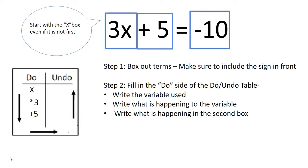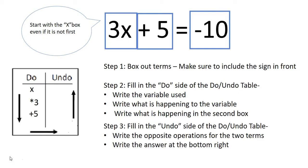Next, move to the Undo side of the table. This side will contain the opposite operations for what's on the Do side. The opposite of multiply 3 is to divide 3, and the opposite of add 5 is to subtract 5. Then just write the answer at the very bottom right. In our example, it's negative 10.